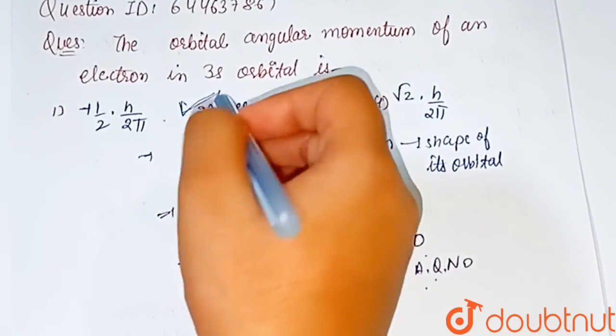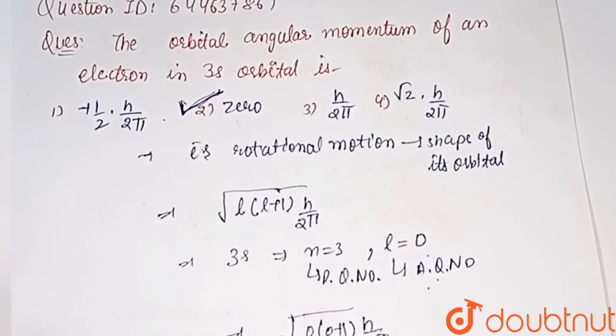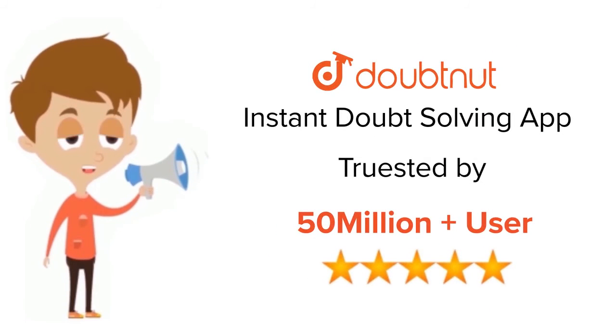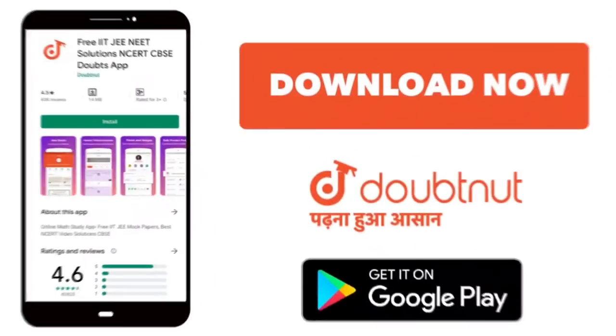For class 6th to 12th, up to IIT-JEE and NEET level, trusted by more than 5 crore students. Download Doubtnet app today.